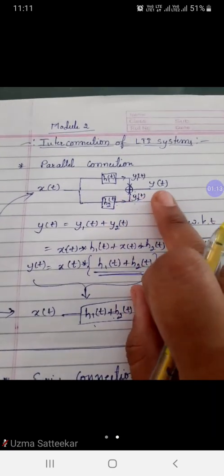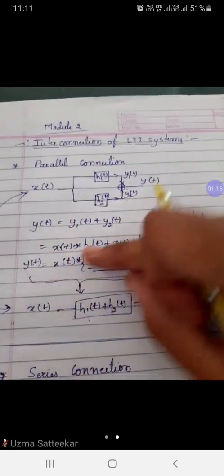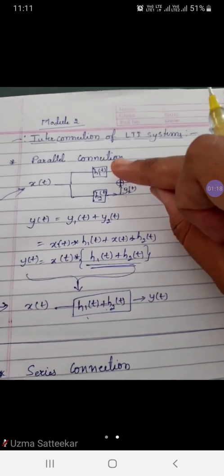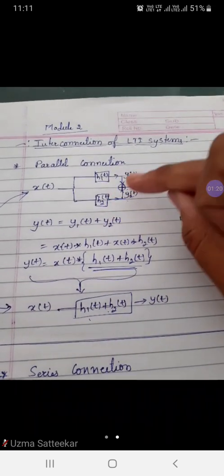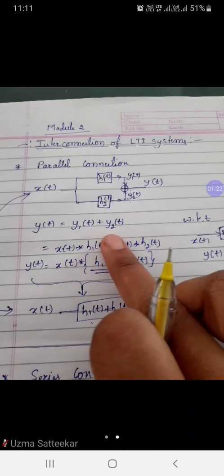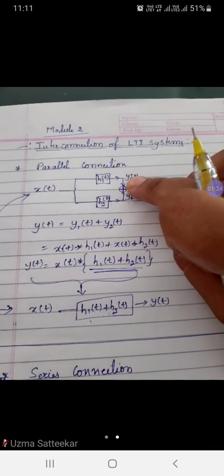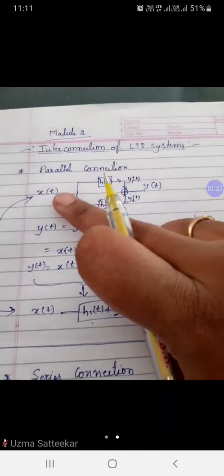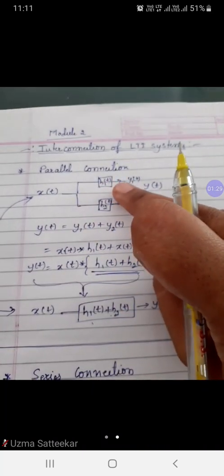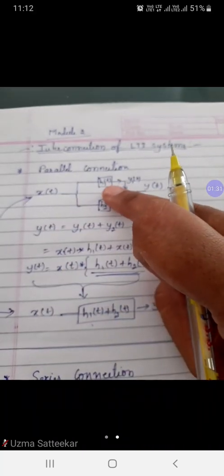Let us see. This output can be written as the sum of these two outputs, y1 and y2. In turn, y1 is coming from this, so we can interpret it as the convolution between x and h1.